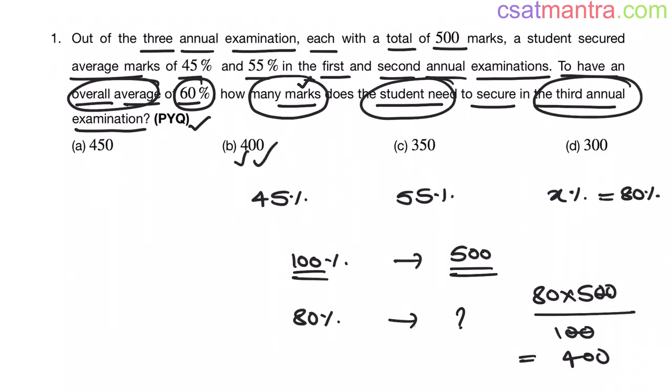Let me summarize quickly. We need marks secured in the third annual examination, but everything is given in percentages. So I found the percentage first. I assumed it as X and then found it using the average formula. The average formula is sum of all percentages divided by number of percentages. From that I found X equals 80%. And we know 100% is 500 marks, so 80% is 400. This is how you can solve this problem, my friends. Very easy problem.